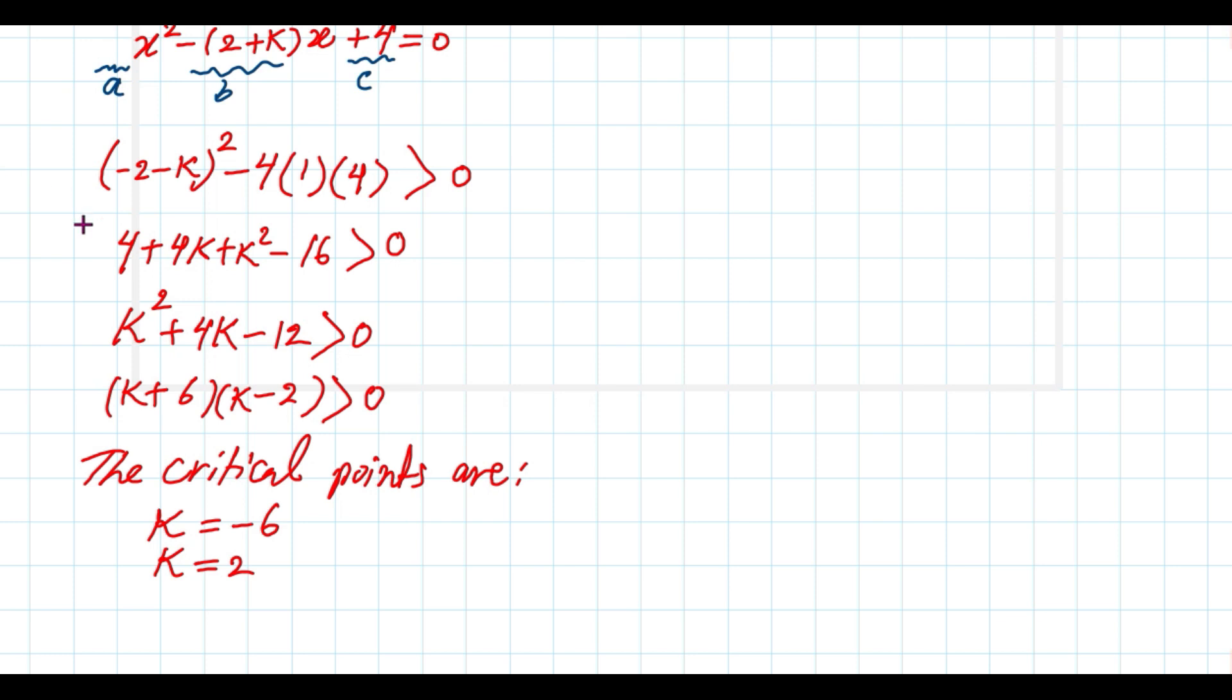Then we are going to sketch the curve for this quadratic function in order to get the solution for k, or the set of values of k. We know that the leading coefficient is positive here. Therefore, the curve is a concave up curve. And then we are drawing the x-axis line, which represents the values for k.